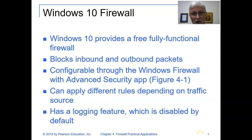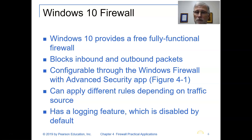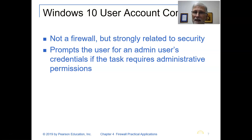The Windows 10 firewall provides a free, full-functioning firewall. It blocks inbound and outbound packets and is configurable through the Windows Firewall Advanced Security app. You've got to make sure when you use the Windows Firewall, go to the Advanced Security — Figure 4.1 shows you how to get there. You can apply different rules depending on what traffic source you want. As a default, it has the logging feature turned off, so if you want to know who's trying to break in or what packets are coming through, you can turn that logging feature on.